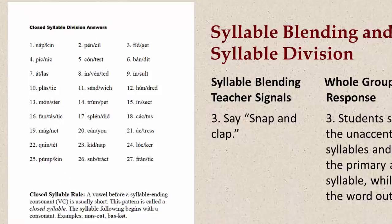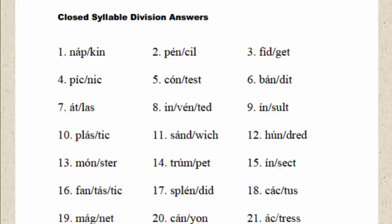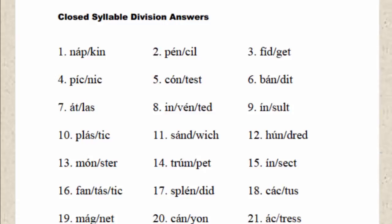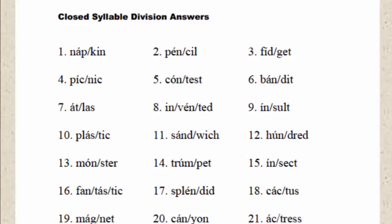For the syllable division worksheets, students print the syllable blending words in the spaces provided, then divide the word into syllables with slash marks and write the accent marks above the primary vowel accents. After completion of the worksheet, students self-correct the syllable and accent marks in another color pen or pencil from the syllable division answer key.